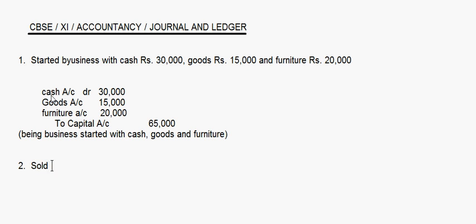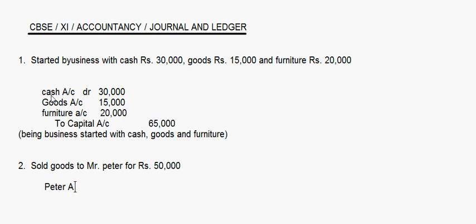Sold goods to Mr. Peter for rupees 50,000. Here the entry is Peter account debit to sales account.